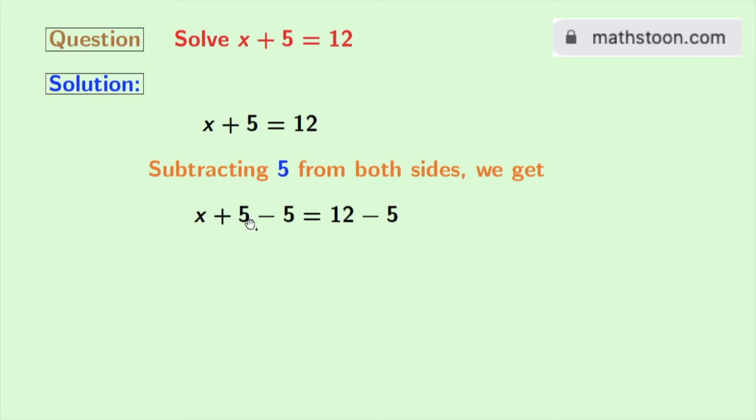In the left hand side, look that we have plus 5 and minus 5, which is 0. So we are left with x in the left hand side.